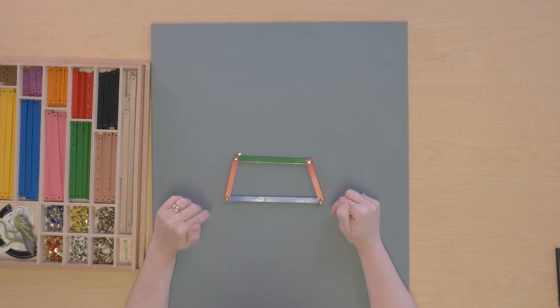It has some vertices, has sides, it has a perimeter, but there's something interesting about trapezoids.